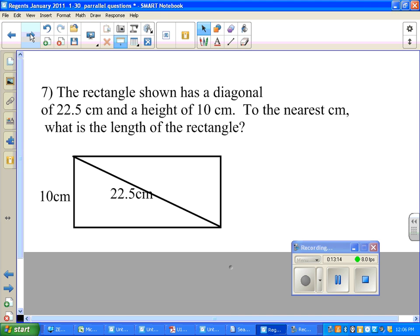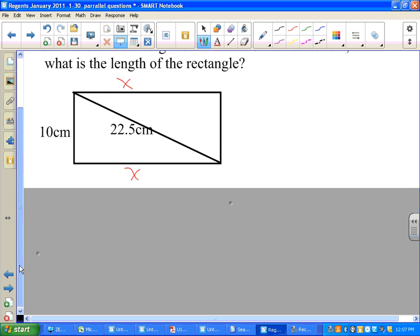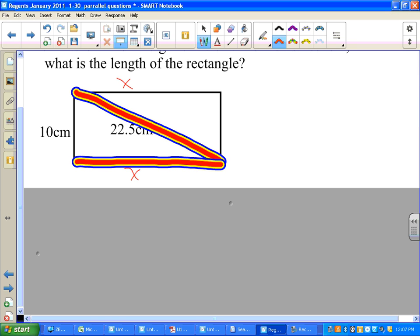Let's look at number 7. The rectangle shown has a diagonal of 22.5 centimeters, and it is labeled, and a height of 10 centimeters. It's a rectangle. To the nearest centimeter, what's the length of the rectangle? If I put x here, that's somewhat convenient. This is a better location. Remember, opposite sides of a rectangle are the same. Why did I want to do that? Let's highlight a part of this. We notice here are the three sides that I have. Guess what? It makes a right triangle.